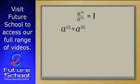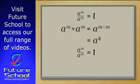Here, we have a to the m divided by a to the m. That equals a to the m minus m, which equals a to the zero. But we already know that a to the m divided by a to the m gave us one. This means that a to the zero must equal one.